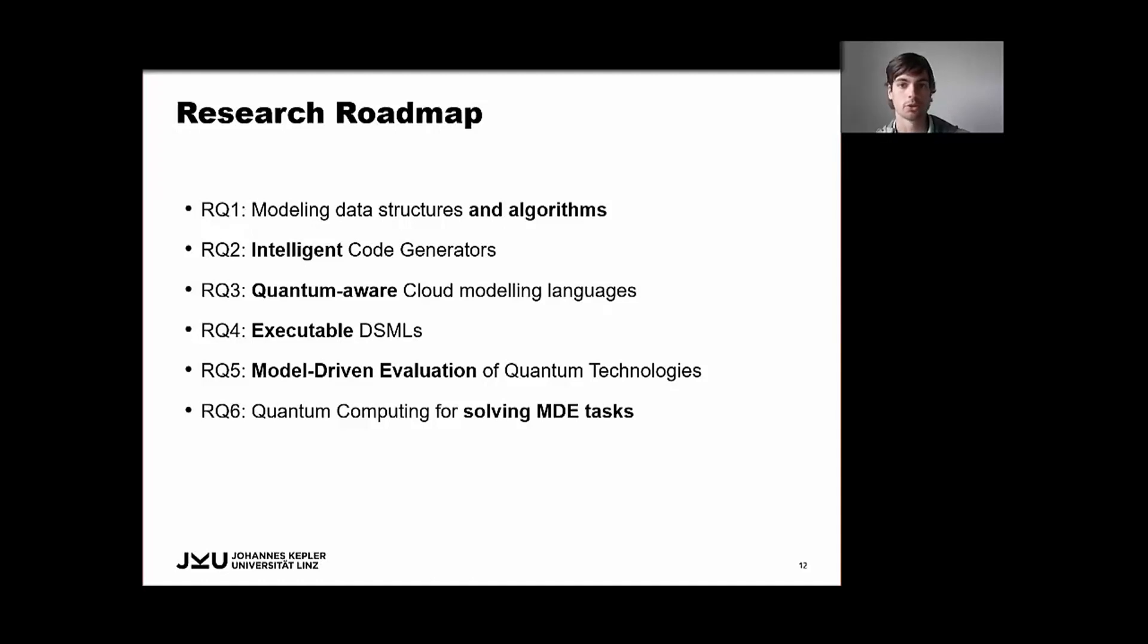The fifth research question refers to increasing the efficiency of experimentation with quantum technologies via MDE practices. Like, for example, an automated data generation from models. And therefore, the modeling environment may serve to run domain-specific studies on quantum technology, of course, provided there are feasible DSMLs for this purpose.